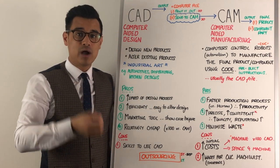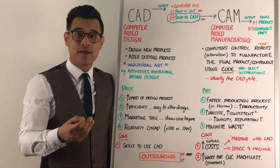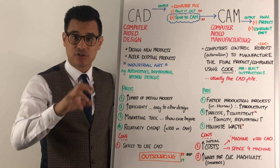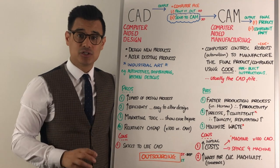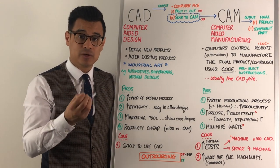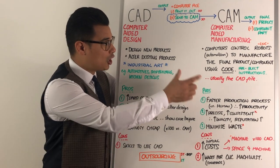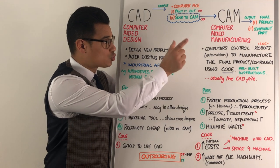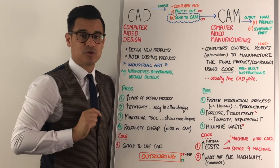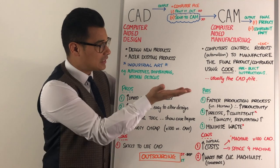You will have computers controlling a robot arm, and their job is to do whatever the code has told them to do — this code is a pre-built instruction. Usually the code that controls the computers and tells the robots what to do is in fact that CAD file.